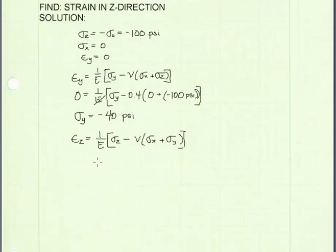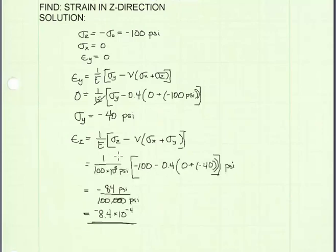And now I can solve for our strain in the z-direction using the generalized Hooke's Law equation for epsilon z. And substituting into the equation for epsilon z, modulus of elasticity is 100 times 10 to the third PSI, sigma z is negative 100, and sigma y we solved for above. We get a value for strain in the z-direction of negative 8.4 times 10 to the negative fourth.